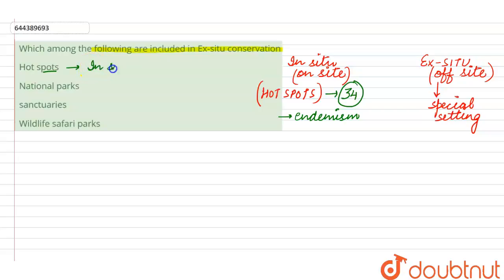So this is the in situ type of conservation. While we have three hotspots which lie along India, these hotspots are the Western Ghats and Sri Lanka, Indo-Burma and Himalaya. So these are the three hotspots which cover exceptionally high biodiversity regions.